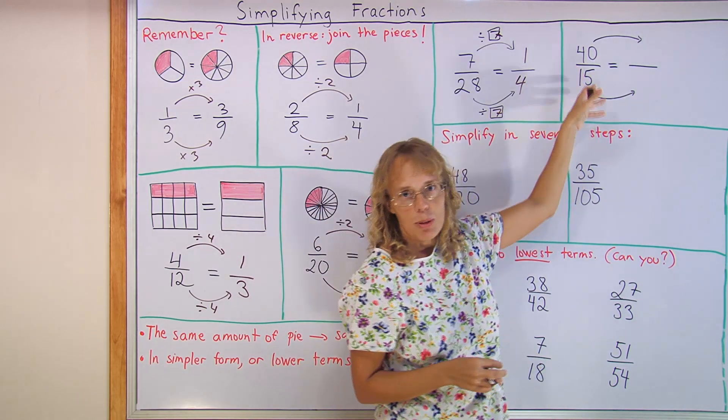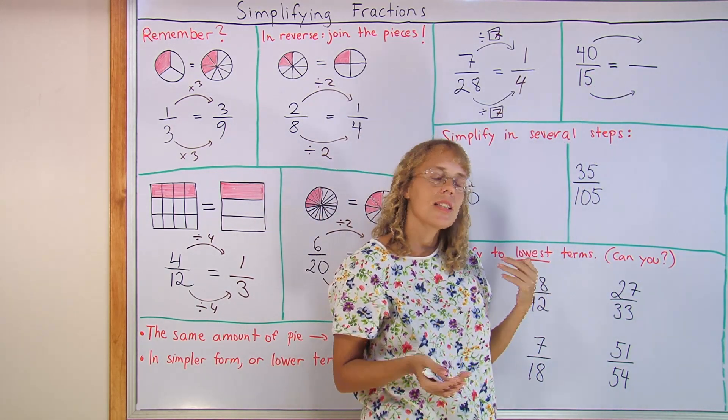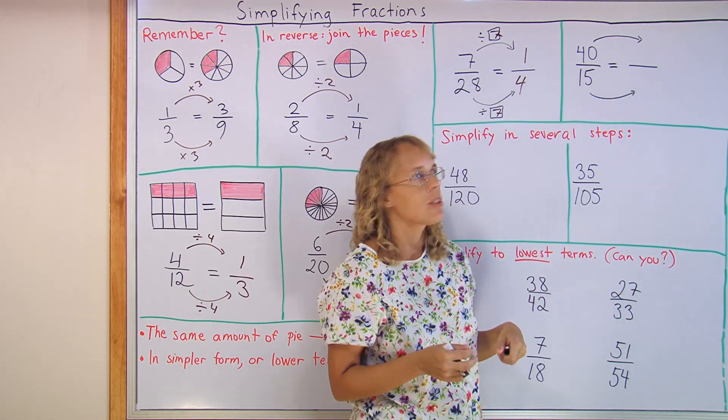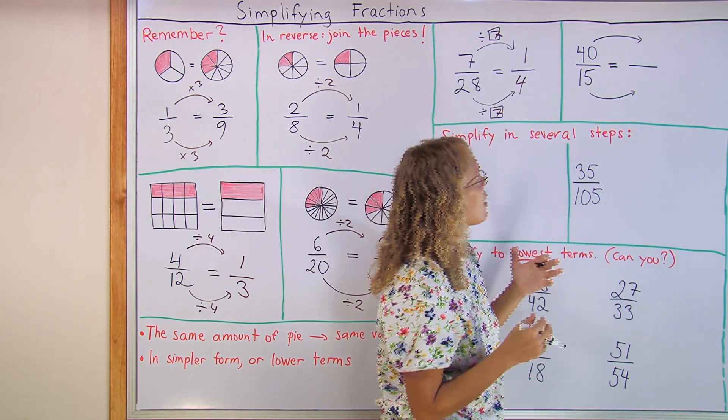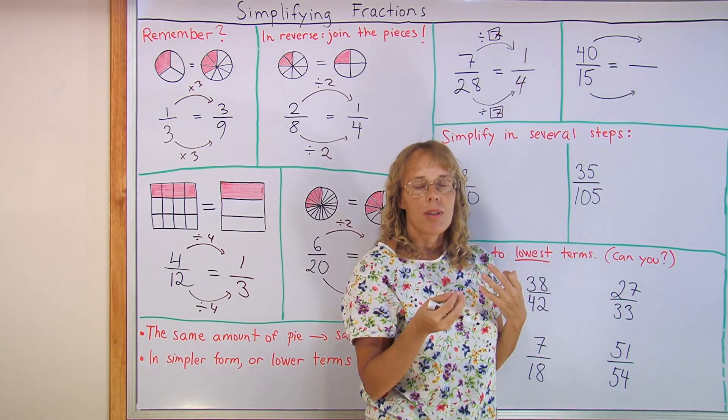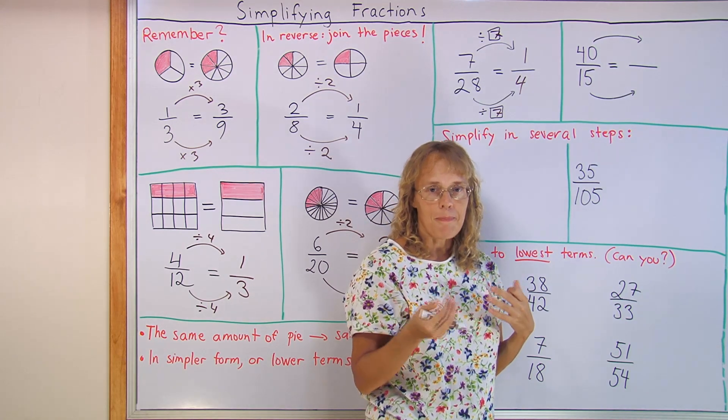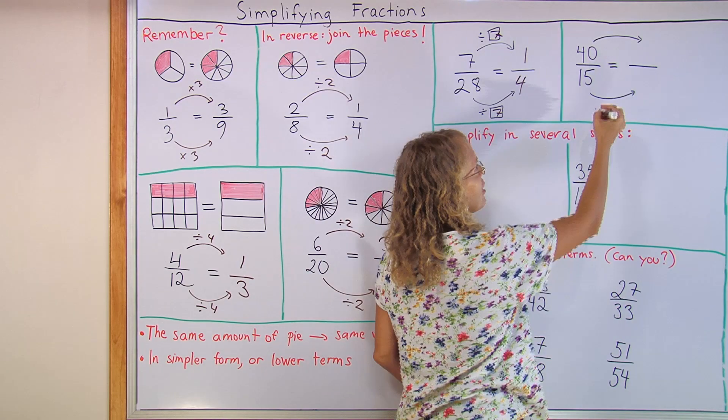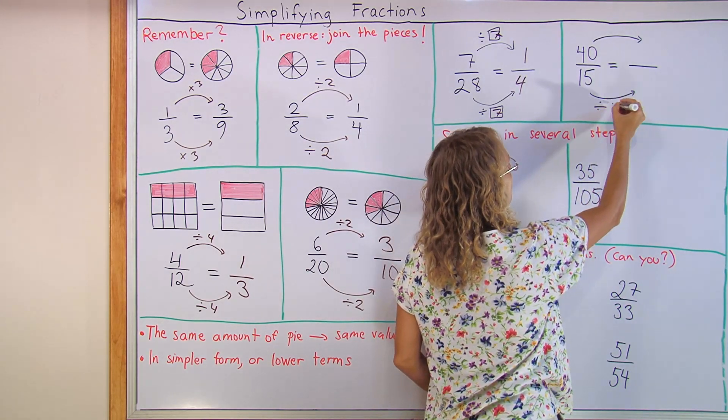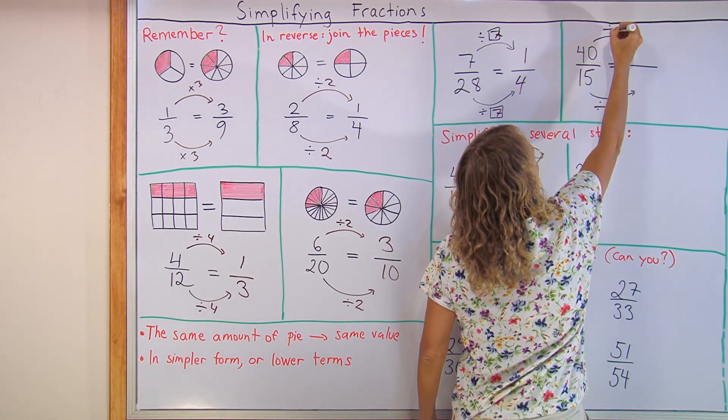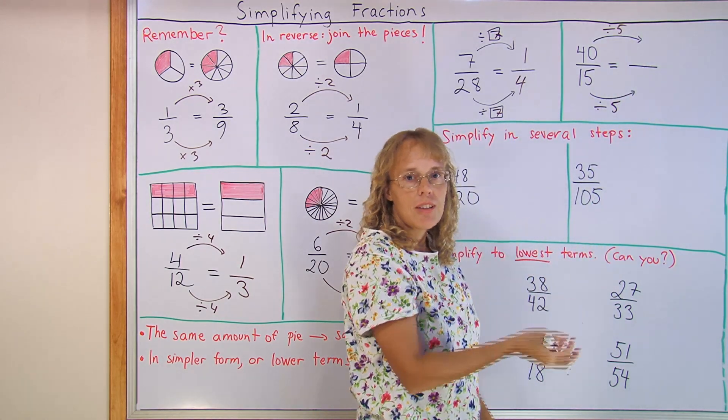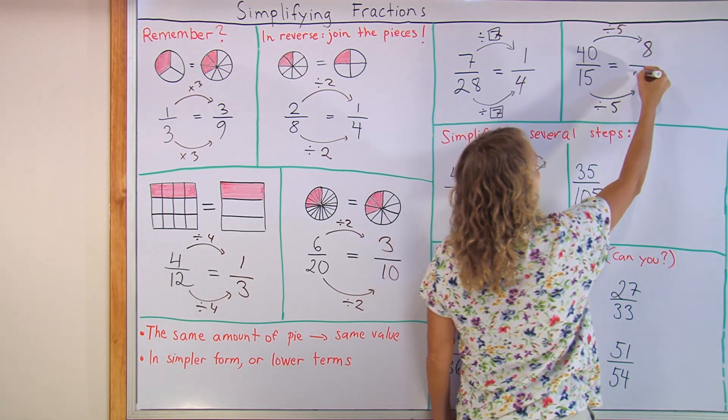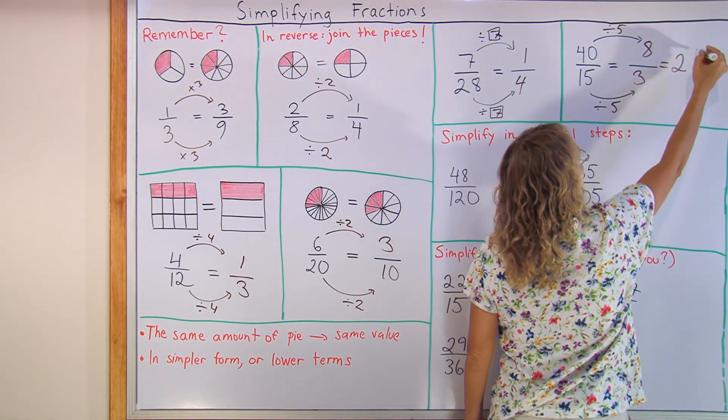Here, we have an improper fraction, but it is just fine to simplify it as is. We don't need to change it to a mixed number first. Just need to think, forty and fifteen, is there any number that they both are divisible by? Do they have any common factor, in other words? And five is such a number. You can divide both by five. Forty divided by five is eight. Fifteen divided by five is three. And after this, you can write it as a mixed number if you need to.